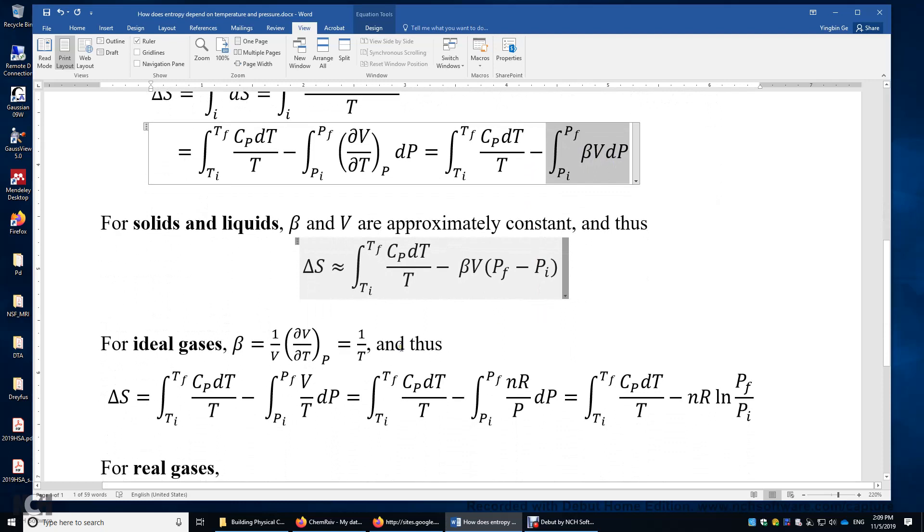For ideal gases, we have beta equals 1 over T. And therefore, the entropy change is equal to simply the integral of CpDT over T minus Nr times the natural logarithm of Pf over P initial.